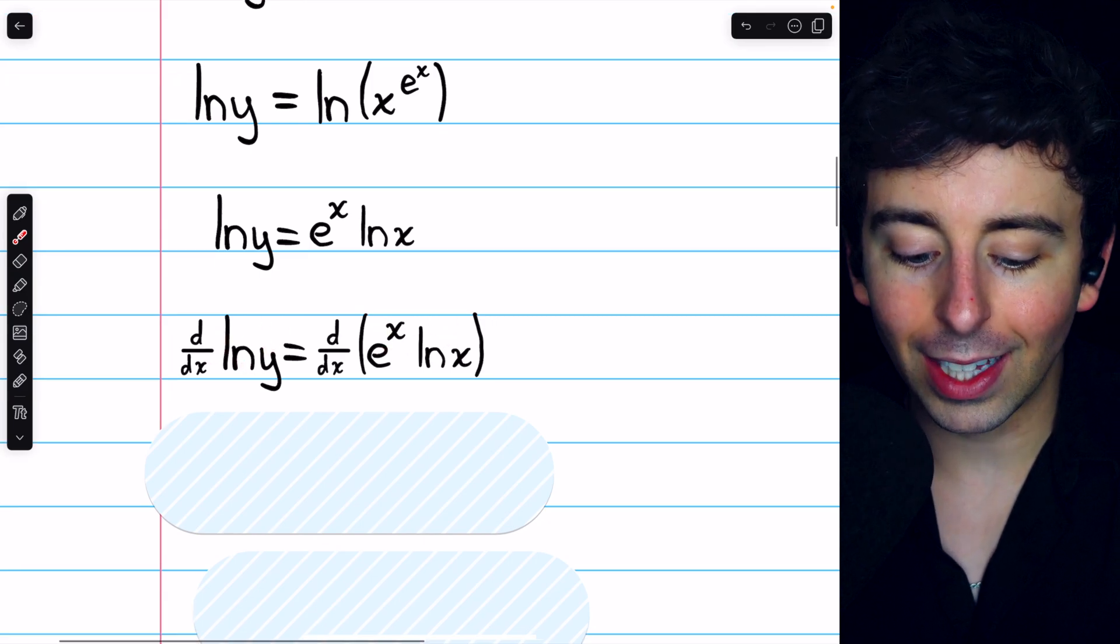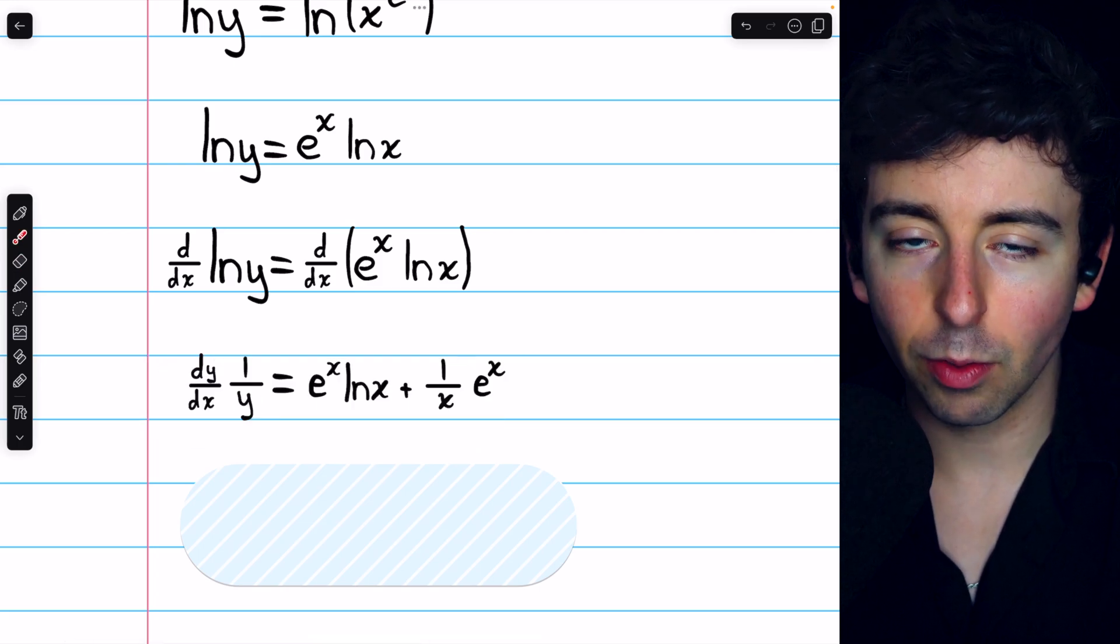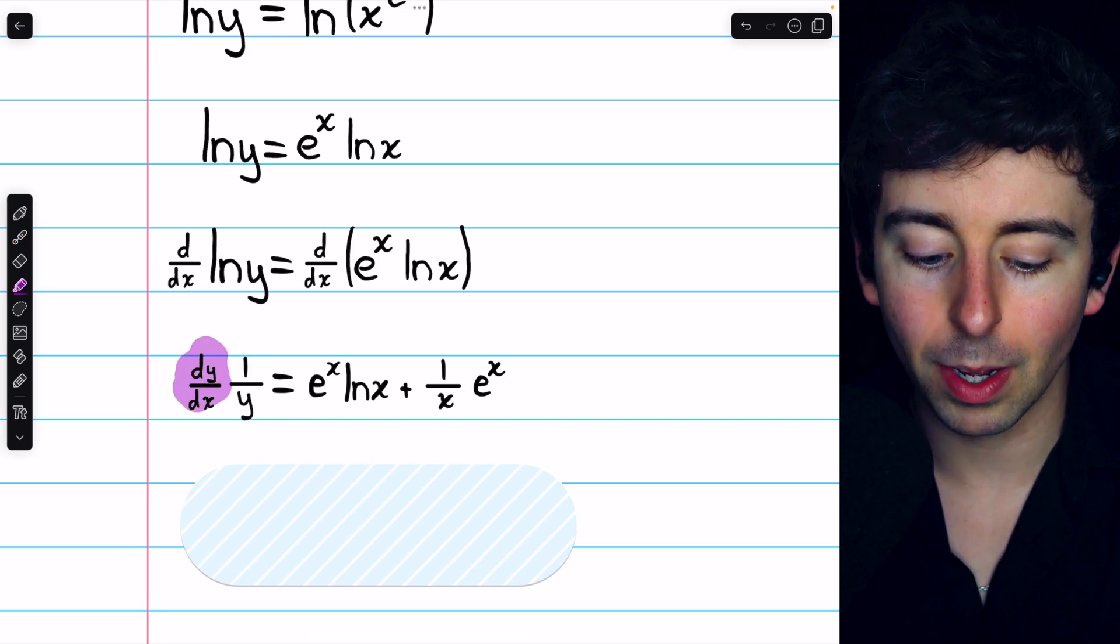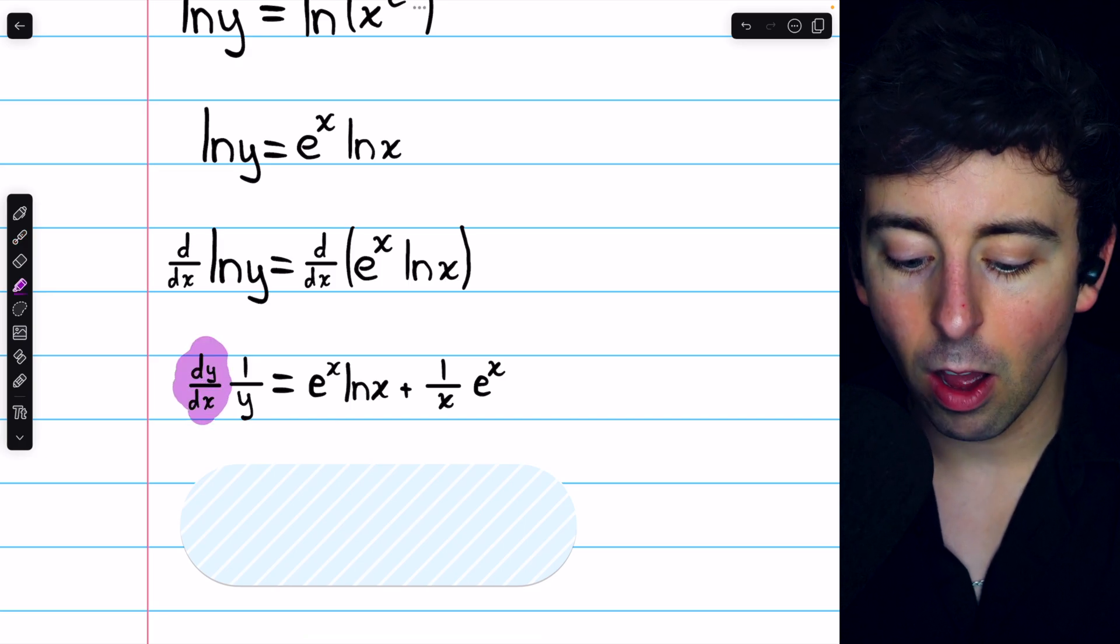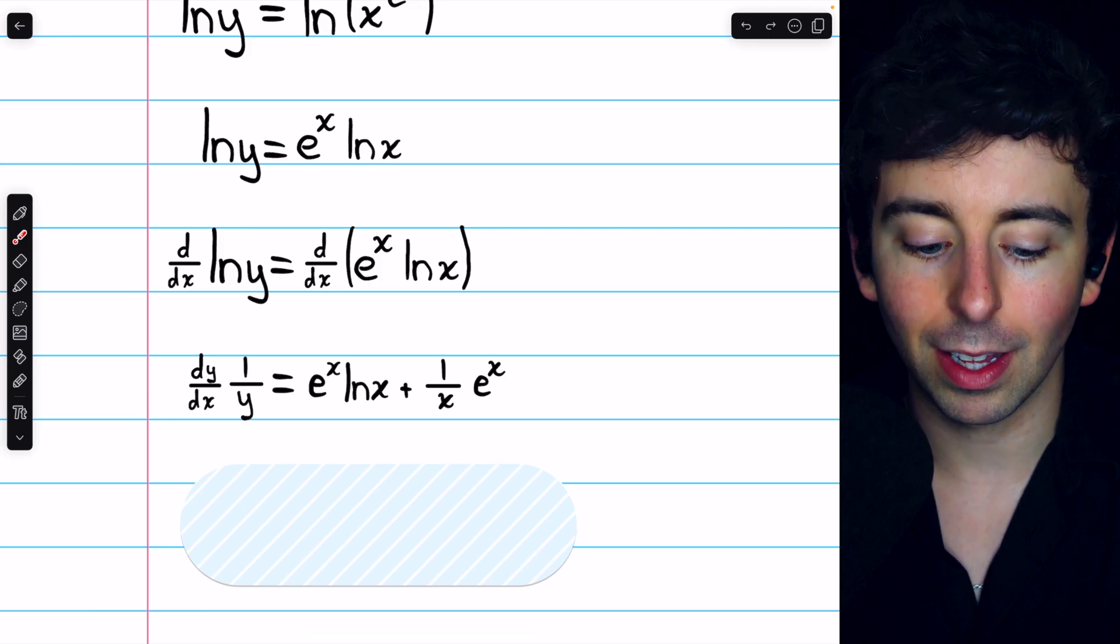Now, the derivative of ln y is just 1 over y. But since y is a function of x, by the chain rule, we also have to multiply by dy dx. On the right, we have f prime g plus g prime f. That's the product rule.